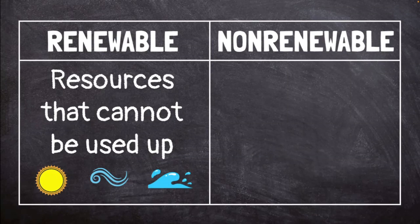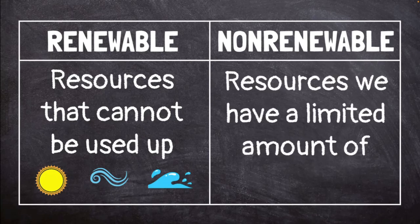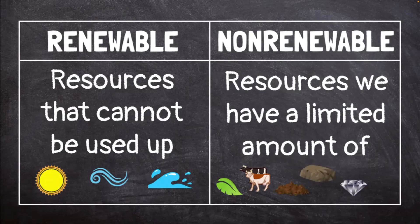We have a limited amount of non-renewable resources. These include plants, animals, soil, stone, minerals, oils, and natural gases. We use these resources faster than they can form. If we aren't careful, we could run out of our non-renewable resources.